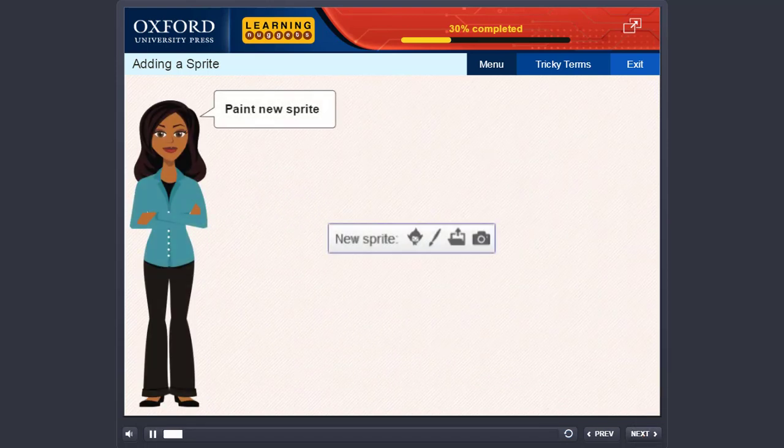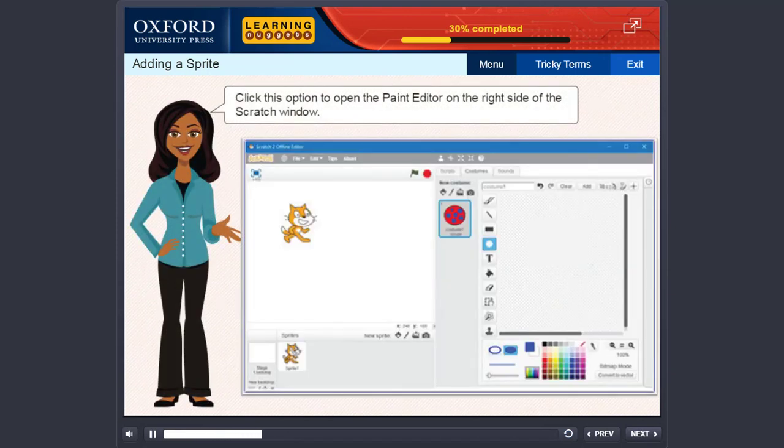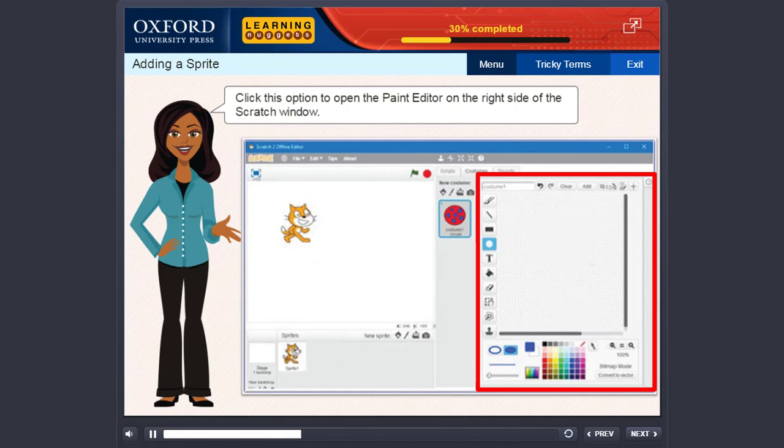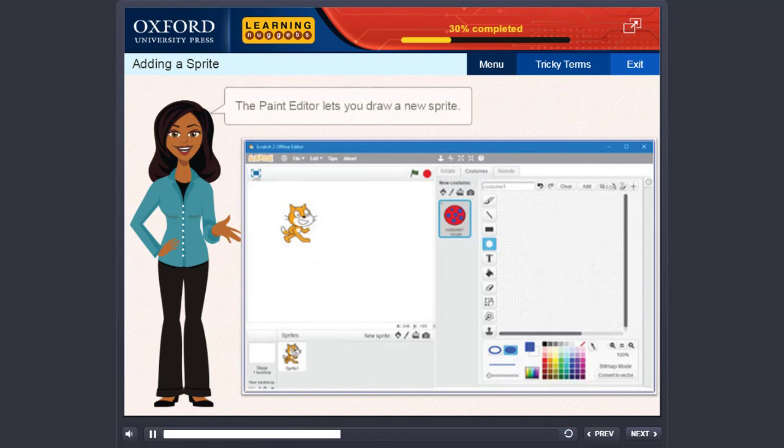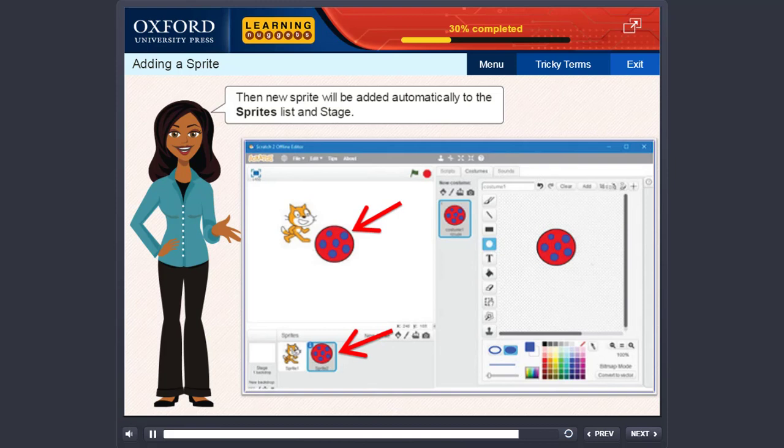Paint new sprite. Click this option to open the paint editor on the right side of the Scratch window. The paint editor lets you draw a new sprite. The new sprite will be added automatically to the sprites list and stage.